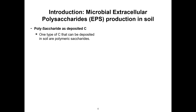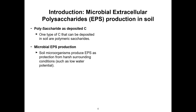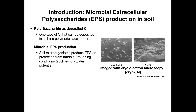Polysaccharides are part of the polymers that microorganisms produce in order to protect themselves, like DNA and protein. Polysaccharides are composed of many monosaccharides bonded with a glycosidic bond, like the example of cellulose shown here. Microorganisms produce them to protect against harsh environmental conditions, such as low water potential.